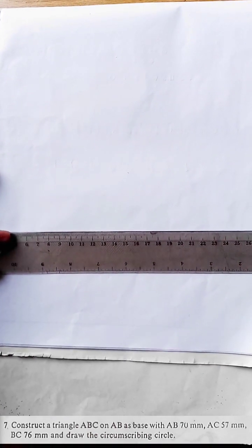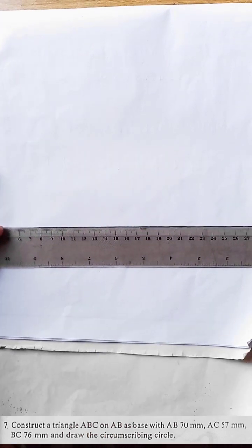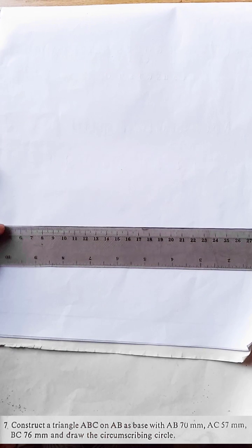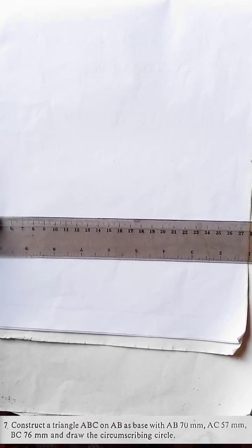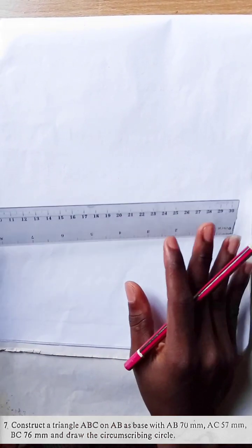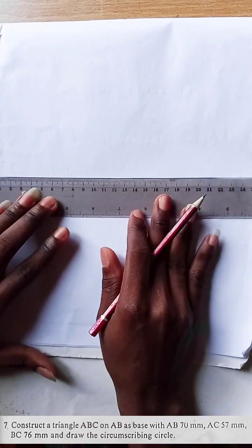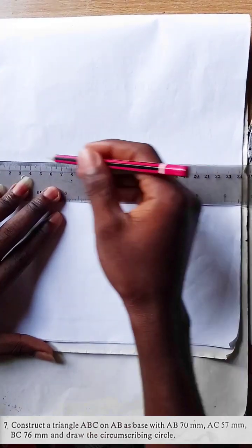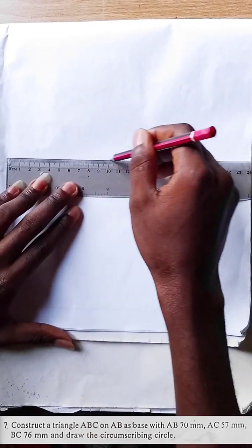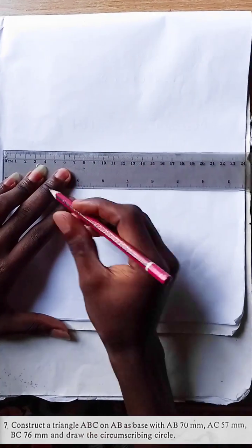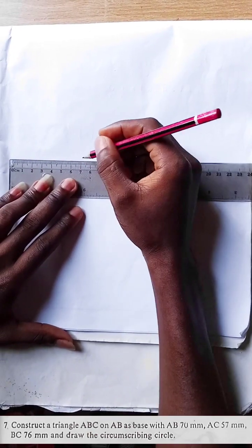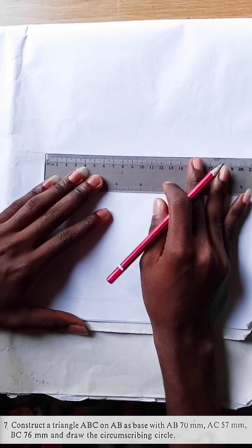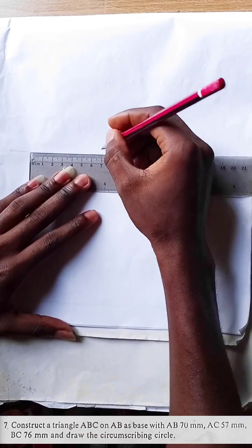From our question number seven, we are being asked to construct a triangle ABC on AB as base with AB 70mm. So we use our ruler, we'll measure out 70mm. First of all we draw a straight line, so from that straight line we'll measure out 70mm. 70mm means 7cm.